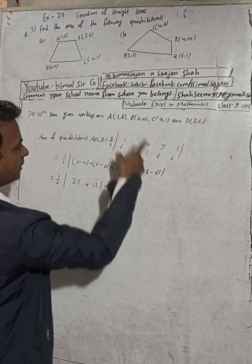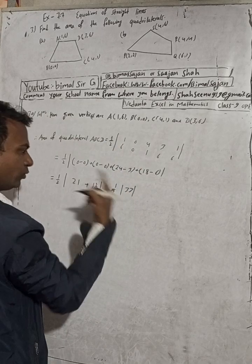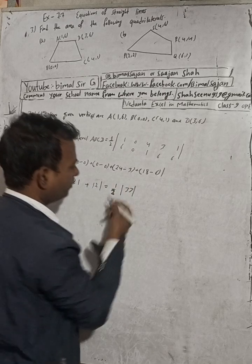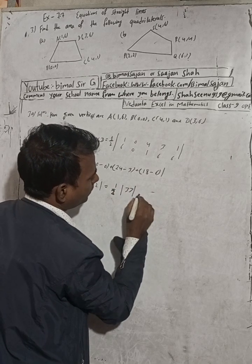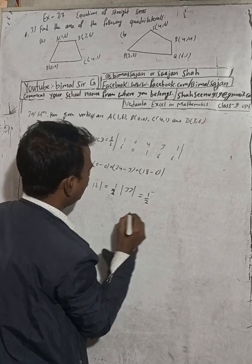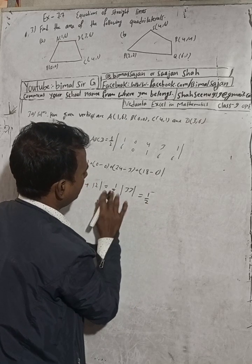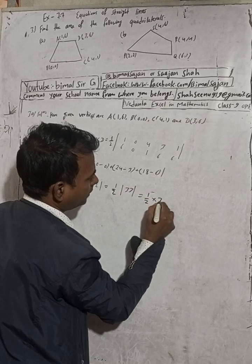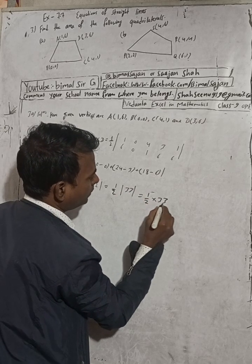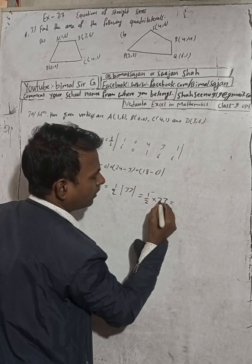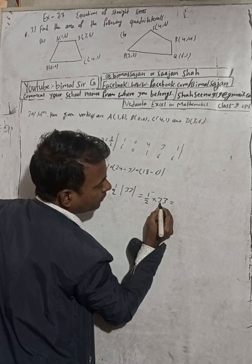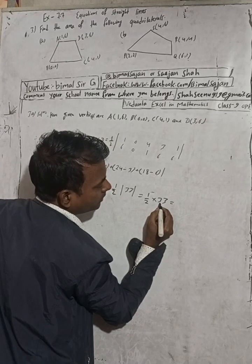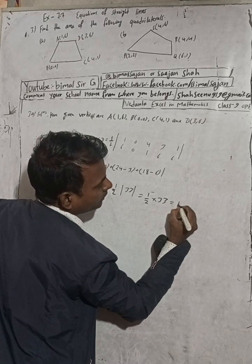This is 1 by 2 times modulus of 33. This is plus because we're taking it anti-clockwise. Whether it's plus or minus, we take the modulus. We remove the modulus and this is 33.